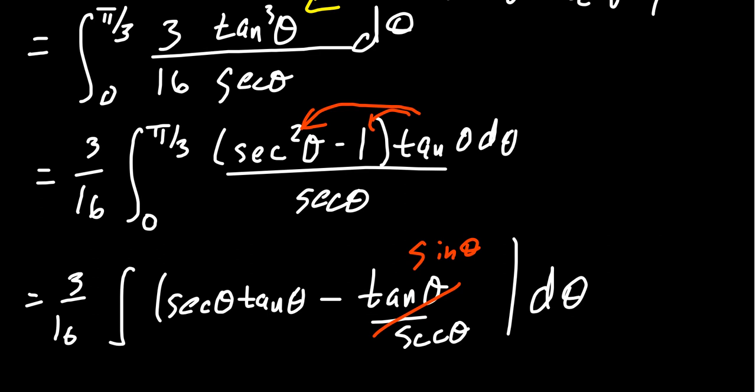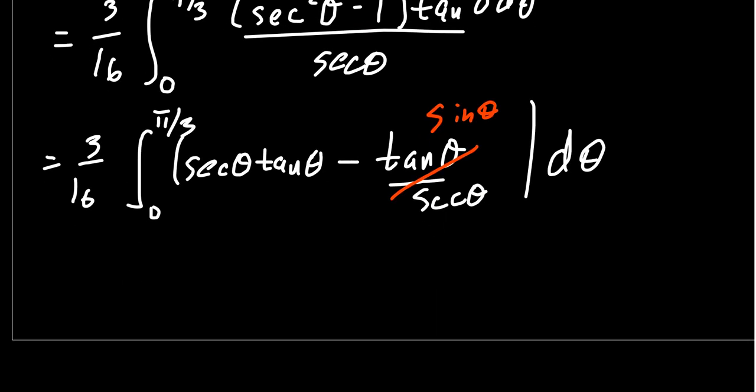And remember our bounds, 0 to pi-thirds. So using the right trig identity at the right moment, the Pythagorean identity saved us right here, we can then find the antiderivative, 3-sixteenths. The antiderivative of secant tangent is a secant, like we mentioned earlier. Antiderivative of negative sine is a positive cosine. And we evaluate from 0 to pi-thirds.